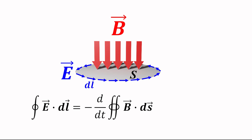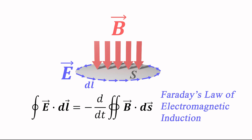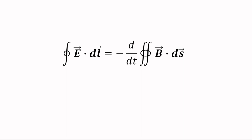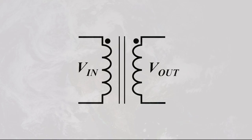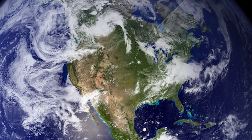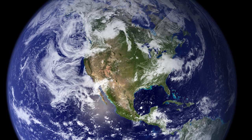It is essentially impossible to overstate the significance of Faraday's law. That a time-changing magnetic flux can induce a potential is the very principle that facilitates the conversion of mechanical power to electrical power, and it makes possible such devices as the transformer that facilitates the distribution of electrical power over very large areas. This particular law of physics forms a large part of the backbone of modern civilization, and without it, the world and the universe would be a far less interesting place.